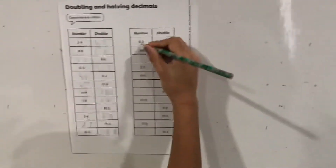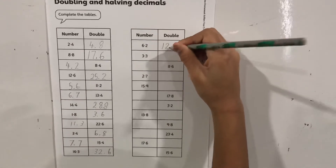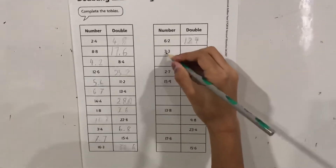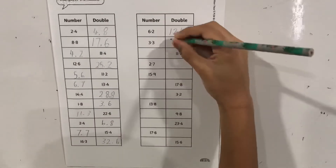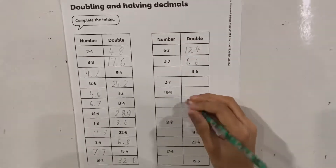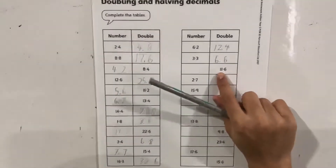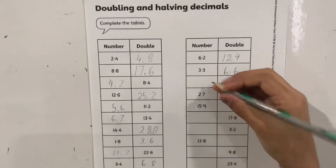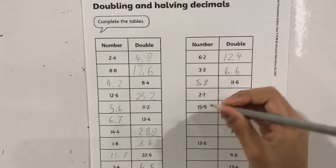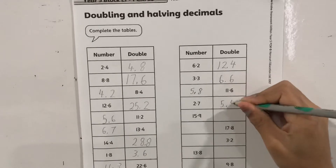6.2 doubled is 12.4, and 3.3 doubled is 6.6. Are you finding it easy now? 11.4 — 11.6 halved is 5.8, and 2.7 doubled is 5.4.